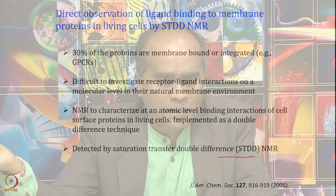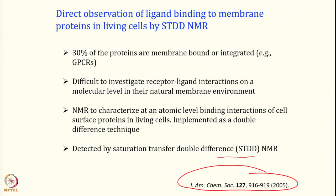If we cannot understand their binders, we are losing out on a lot. So can NMR come up with a technique where we do not need to purify the protein but can still investigate what the binder is? This was offered by the Mayer group and published about 15–17 years ago. This technique, called STDD — saturation transfer double difference — allows us to take proteins in their natural membrane environment and understand their binding at the atomic level in a living cell.